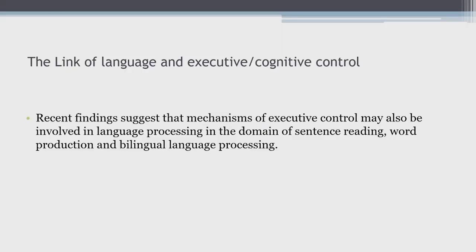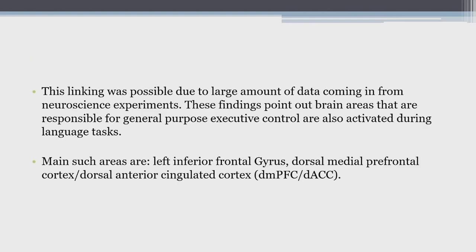The language and executive control link has been established by a great number of research outputs, primarily from neuroscientific experiments. Recent findings have suggested that mechanisms of executive control may be involved in language processing in three domains: sentence processing, word production, and bilingual language processing. These are the three domains that have been extensively researched, and this linking was possible due to a large amount of data coming primarily from neuroscience experiments, as we have seen in Part 1 of this module.